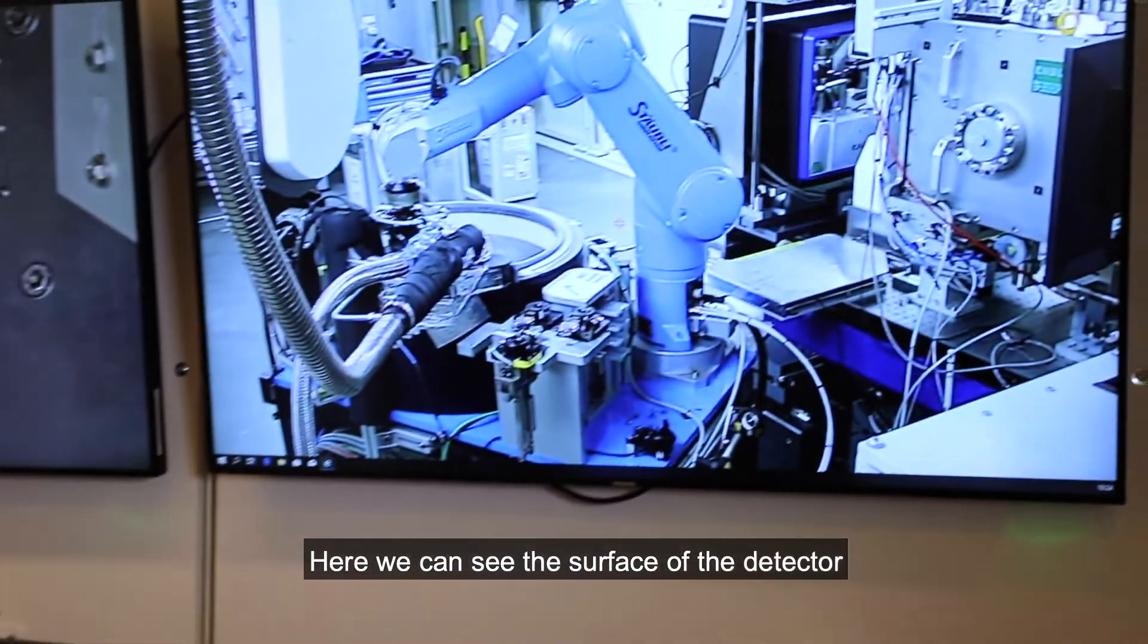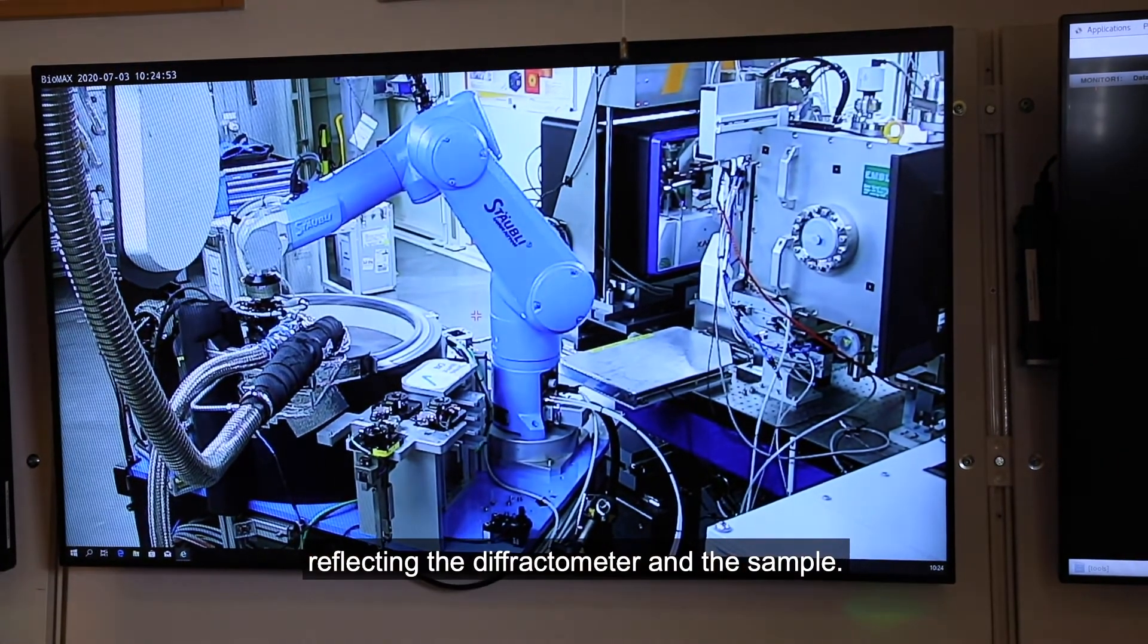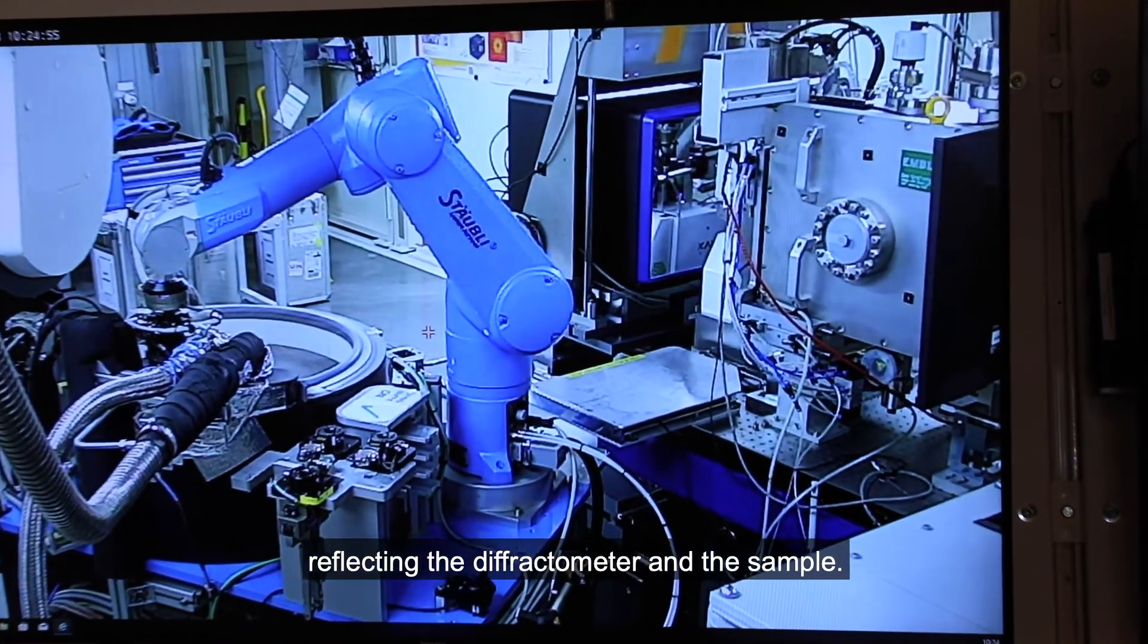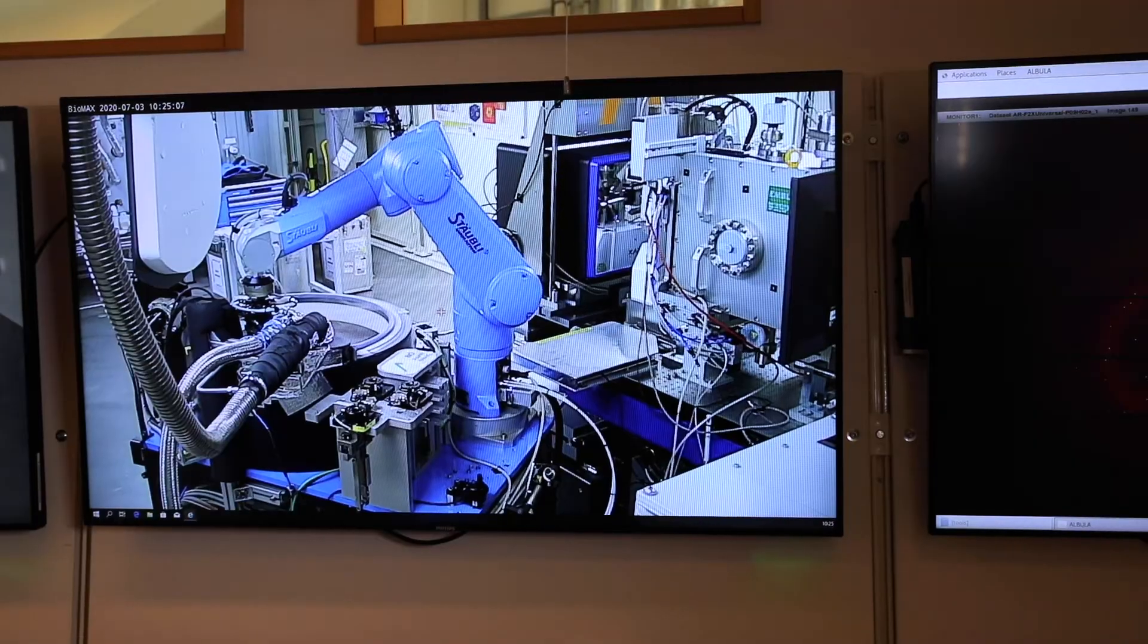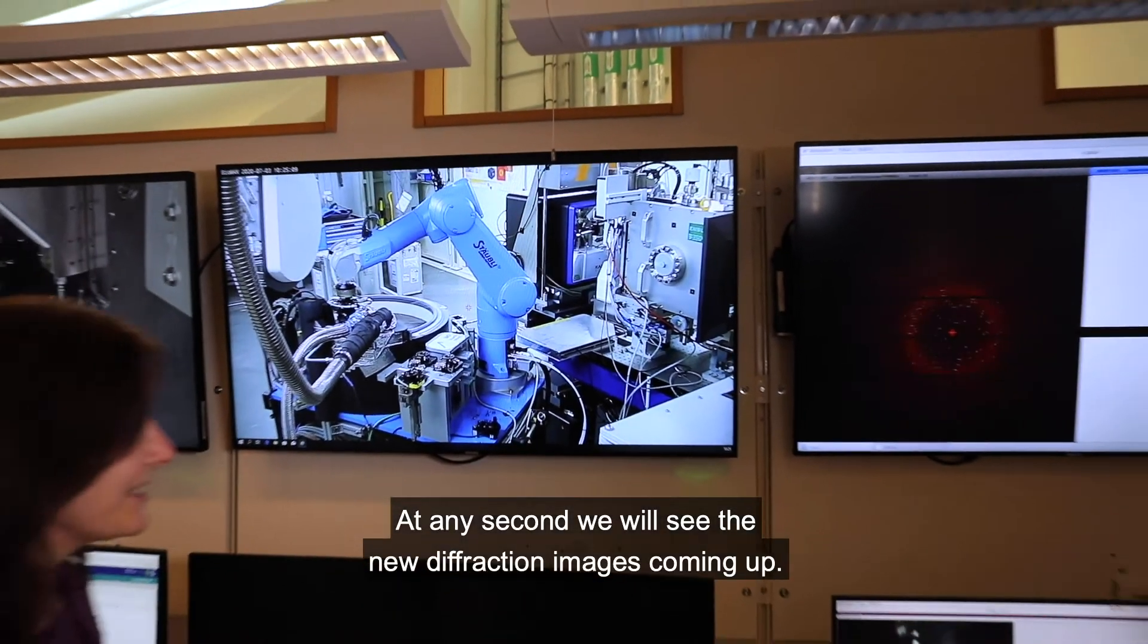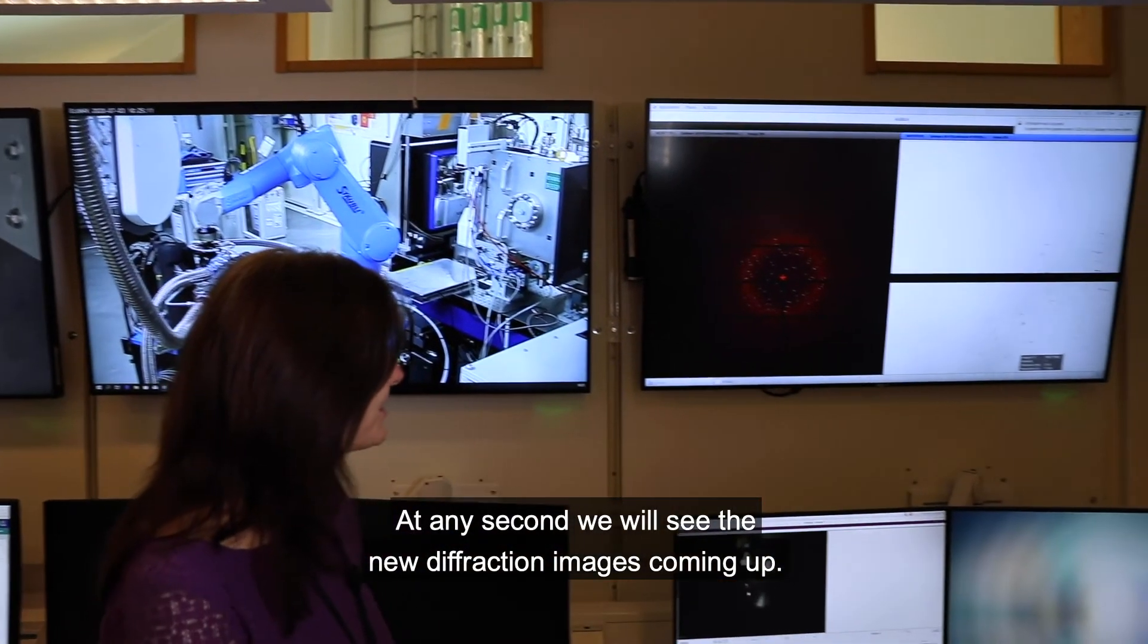And then we will be able to see the crystal rotating while they collect diffraction data. So here we can see the surface of the detector reflecting the diffractometer and the sample. And now they are collecting data again.